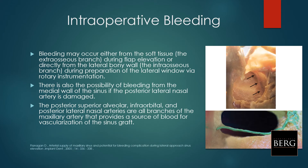Bleeding may come from soft tissue while elevating the flap, or from the lateral bony wall if you injure the intraosseous branch that runs parallel to the alveolar crest. This normally happens when doing a lateral window by rotary instrumentation. You may also get bleeding from the medial wall if the lateral nasal artery is damaged.